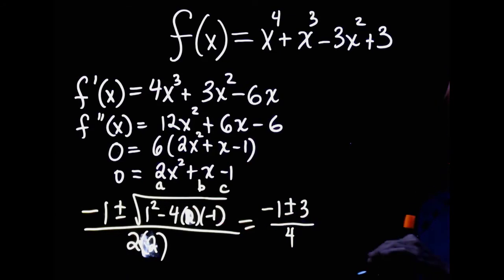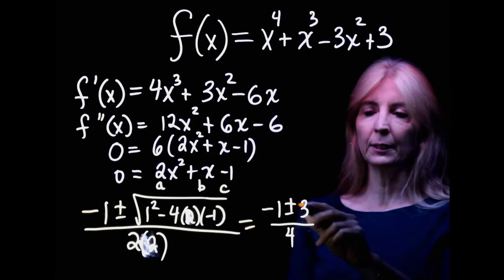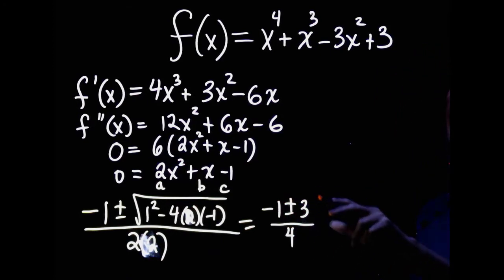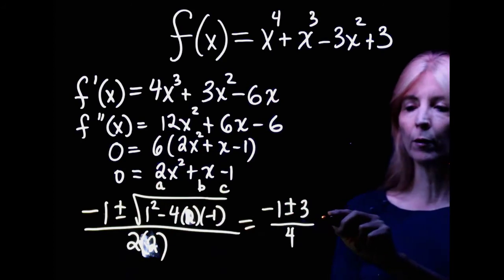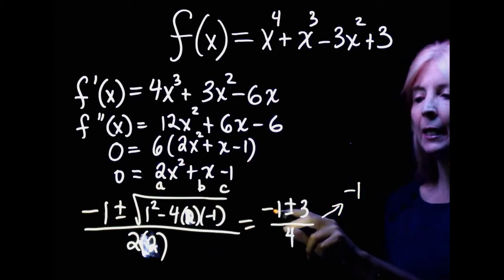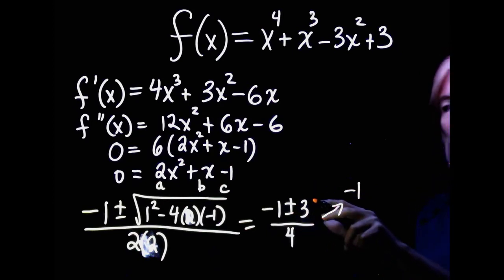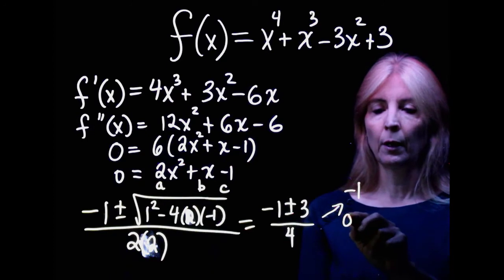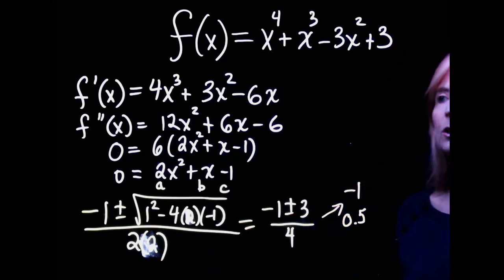So I get negative 1 plus or minus the square root of 9, which is 3 over, I did the same thing on the bottom, 2a, which is times 2, and I get 4. So now I have to solve this for the plus and for the minus. So negative 1 minus 3, negative 4 over 4. So negative 1, negative 1 plus 3, or 3 minus 1, 2 over 4. And I get a half or 0.5.